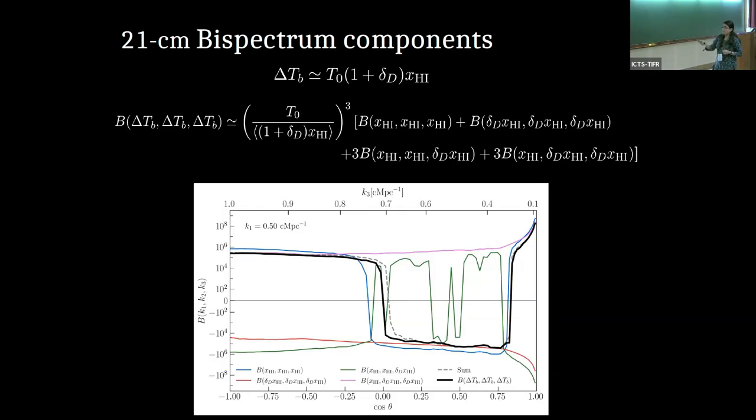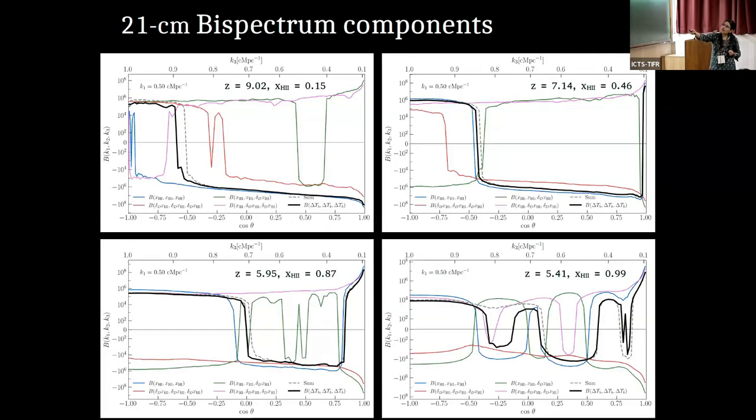And one more thing to note here is that at this redshift, this is the redshift 5.6, we have the largest contribution from, this shape is similar to the neutral bispectrum. And we have similar things at redshift at the midpoint of reionization, the black and blue lines are pretty similar, even towards the end of reionization, almost when the neutral fraction is around 0.9. Only during the beginning phase of the reionization and the very end where there are these fluctuations, we have brightness temperature bispectrum being somewhat different from the neutral fraction bispectrum.